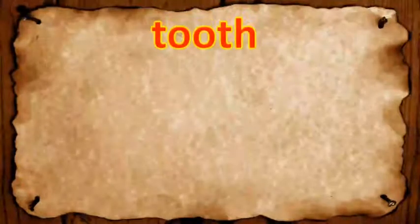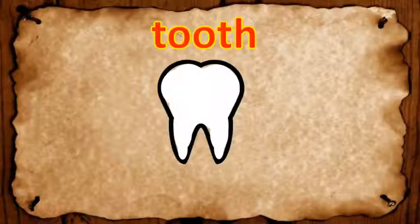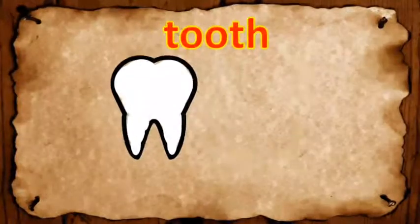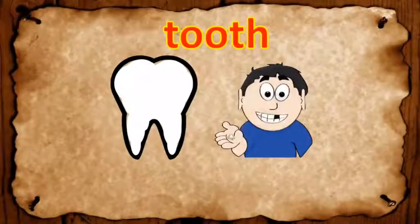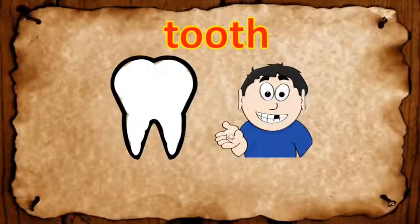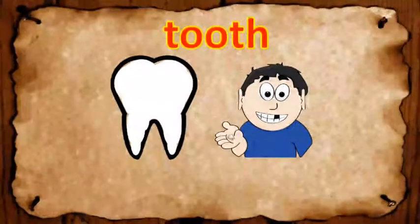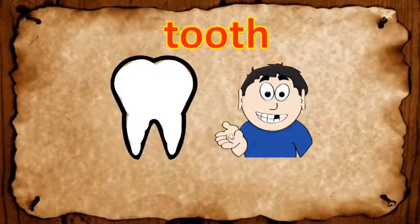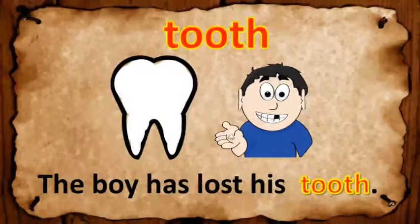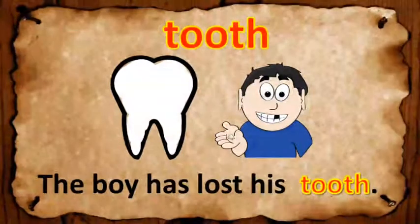The word is 'tooth'. What does 'tooth' mean? A tooth is something which helps us to bite and is found inside the mouth. Look at this boy — you can see he doesn't have a tooth. The word is used in a sentence: The boy has lost his tooth. You can see one tooth is missing.